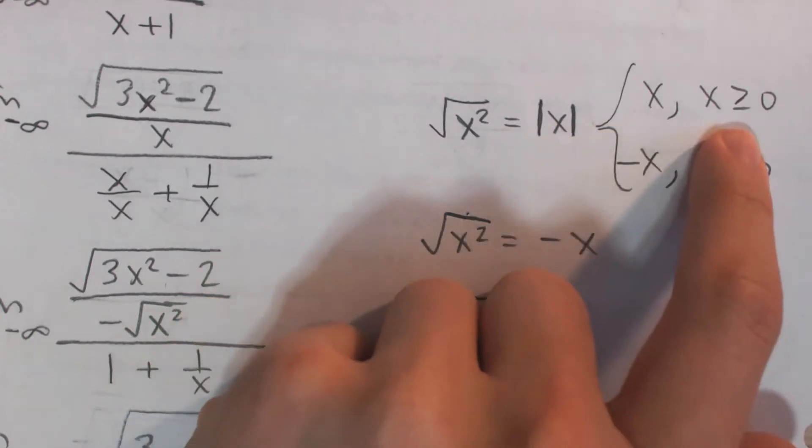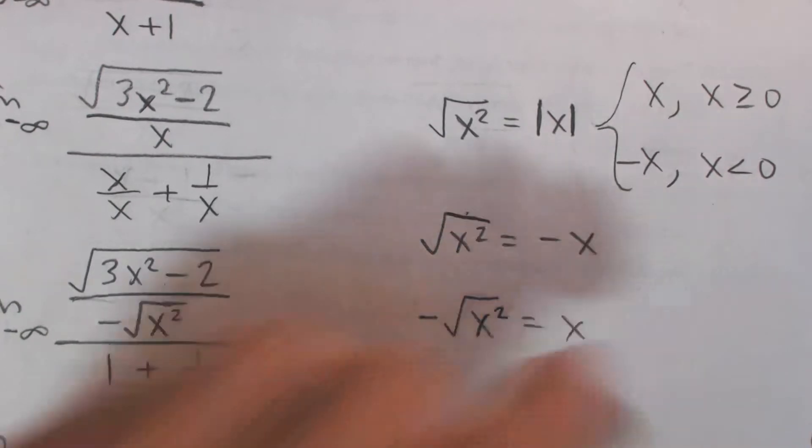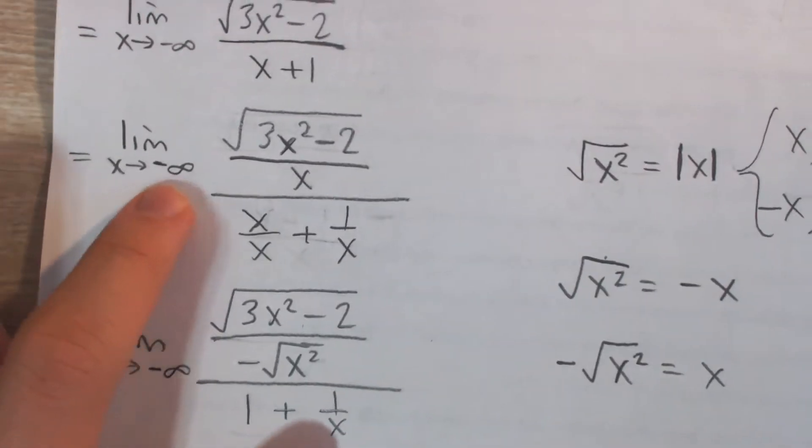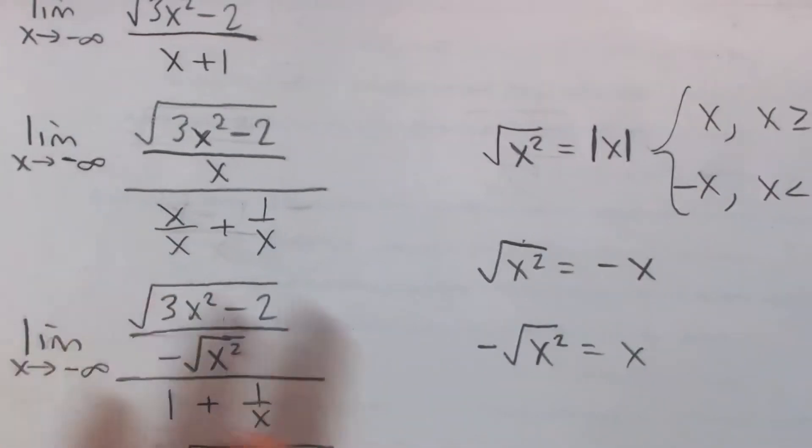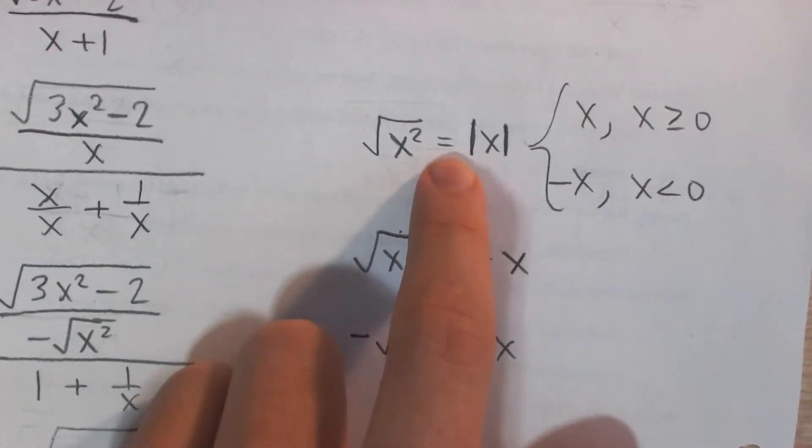And remember, absolute value of x is equal to x when x is greater than or equal to 0. And it's equal to negative x when x is less than 0. And in this case, we're only dealing with x being negative, right? Because x is approaching negative infinity.